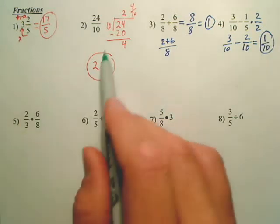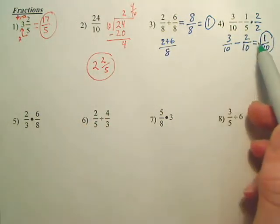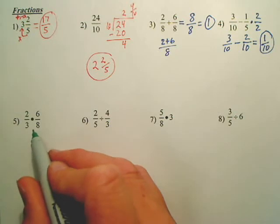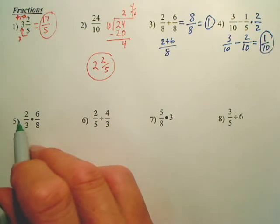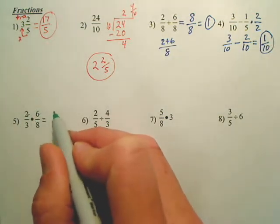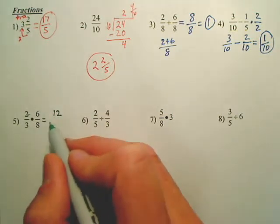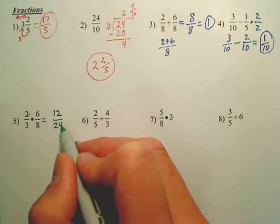So we have simplifying fractions, changing them back and forth. We have adding, subtracting fractions. Let's do some multiplying fractions. When we multiply fractions, we talked about just simply multiplying straight across. So 2 times 6 is 12. 3 times 8 is 24.